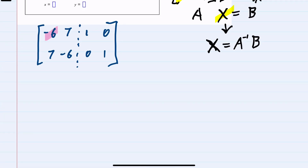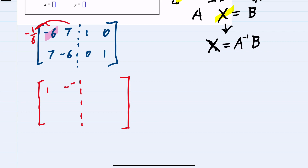Starting off, I would like the upper-left element to be one. So I'll multiply row one by negative one sixth. Negative one sixth times negative six is positive one. Negative one sixth times seven is negative seven sixths. Negative one sixth times one is negative one sixth, and negative one sixth times zero is zero. So we have the one in the upper left. We haven't done anything with the bottom row so I'll just bring that down.